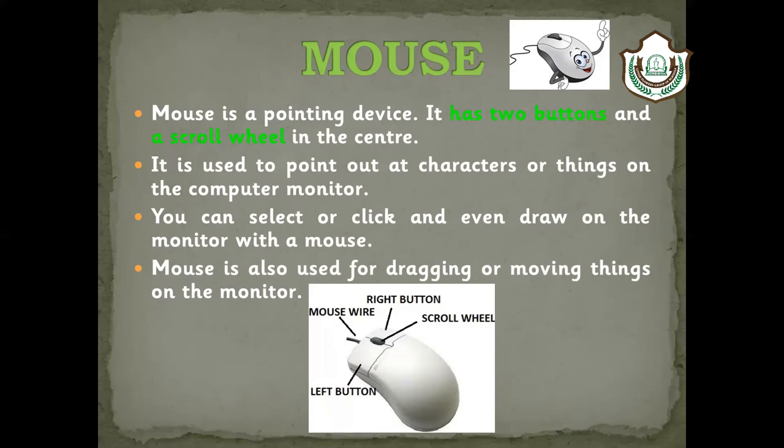The mouse is used to point out a character or thing on the computer monitor. You can point out any character on the monitor screen with the mouse. You can also select, click, and even draw on the monitor with the mouse.